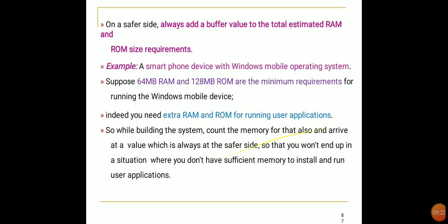The RTOS supplier usually gives a rough estimate of run-time RAM and program memory requirements. Always add a buffer value to the total estimated RAM and ROM size requirements. For example, a small phone device with a Windows Mobile OS requires a minimum of 64 MB RAM and 128 MB ROM, and you also need extra RAM and ROM for running user applications.